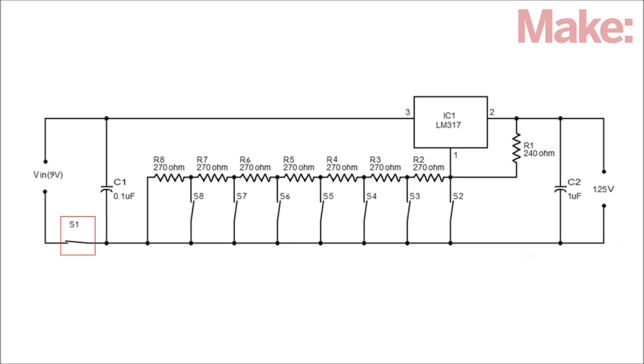Turning on switch 1 turns the circuit on and brings the output up to 1.25 volts. Then turning on switches 2 through 8 in sequence will each increase the output by 1.5 volts, up to a limit set by the supply voltage.